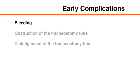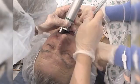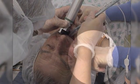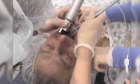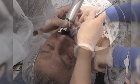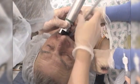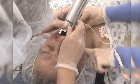Early complications after tracheostomy placement include bleeding, obstruction, and dislodgement of the tracheostomy tube. Bleeding is the most common complication, but is usually self-limited or can be controlled with application of pressure. If obstruction of the tracheostomy cannot be cleared with standard suctioning techniques, or if the tube becomes dislodged, the airway should be secured through oral tracheal intubation instead of attempting to insert a new tracheostomy tube through a tract that is not yet fully matured.